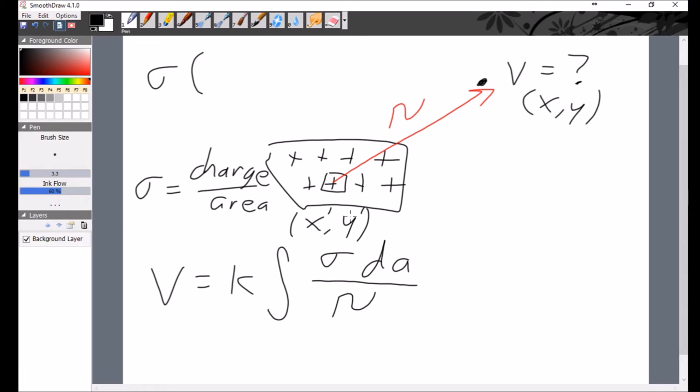So the convention is to call this point here x prime, y prime. So the sigma is a function of x prime and y prime. While the point that we're measuring at is this x and y. We call this point over here the source point because that is where the electric potential is coming from. Whereas this thing here is where you are measuring the potential, so we call that the field point.